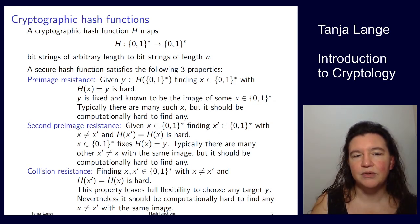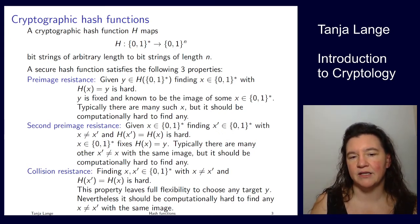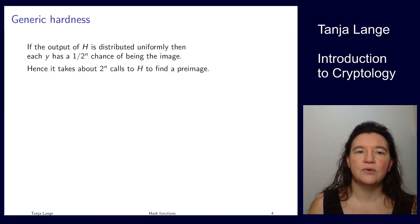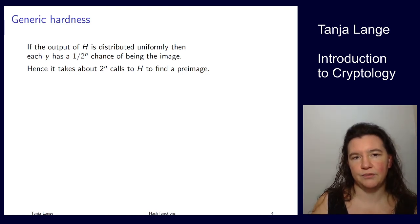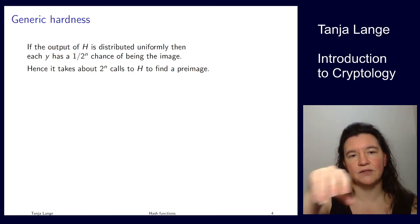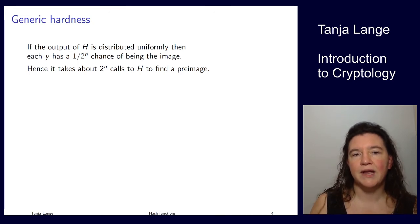The third property is collision resistance: find any x and x prime that have the same image. Here you have full flexibility to choose any target you want. If you can find preimages or second preimages, you can typically also find collisions. Collision resistance gives you a lot more flexibility, and still it should be computationally hard to find any pair x, x prime which map to the same image. For a uniformly distributed hash with n-bit output, finding a preimage takes on average 2^n calls to the hash function.